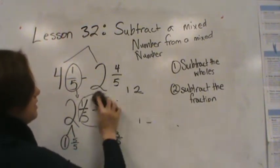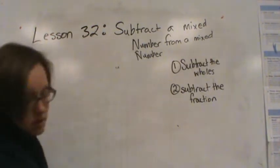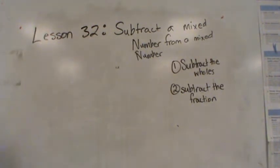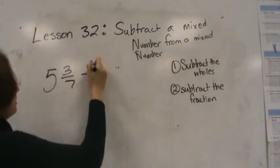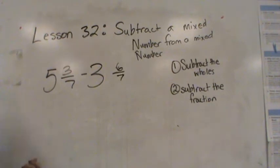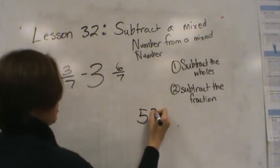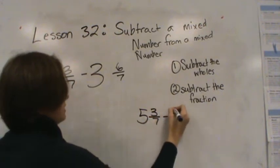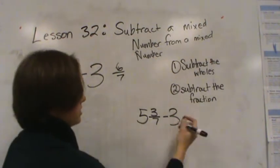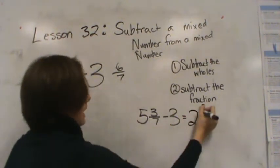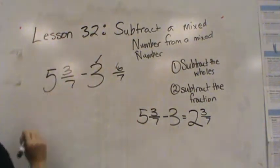Let's try another one. This is 5 and 3/7 minus 3 and 6/7. So I'm going to subtract the whole first. I'm going to subtract this whole first. So from 5 and 3/7, I'm going to take away 3 that is the whole. And I know that 5 minus 3 is 2, and I still have this 3/7. So I'm done with that whole check.